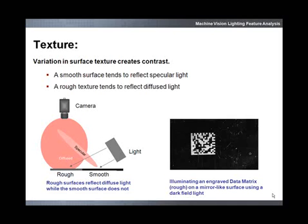The reflective properties of a surface texture can be used to create contrast in features such as an etched mark or a mirror-like surface. In this example, a low angle or dark field light is aimed at a part. The smooth surface reflects light away from the camera in a specular fashion, while the rough texture of an etched mark scatters light back toward the camera in a diffuse fashion. The result is a high contrast, reliable image of the etched data matrix.